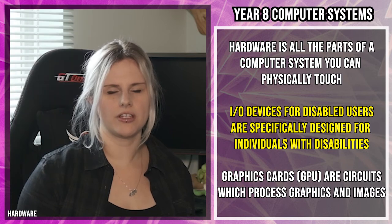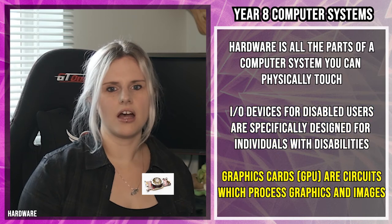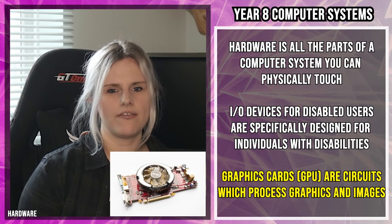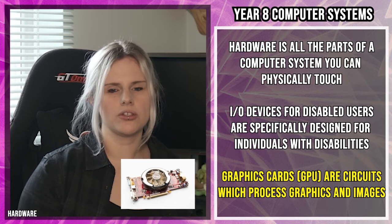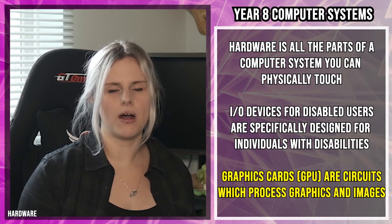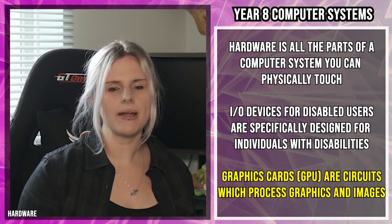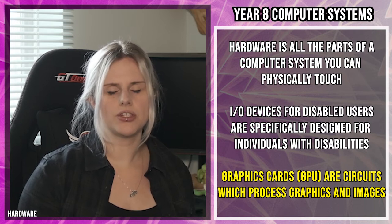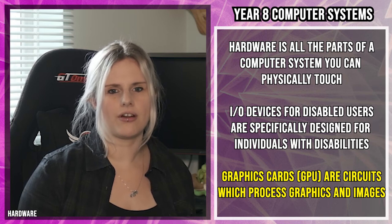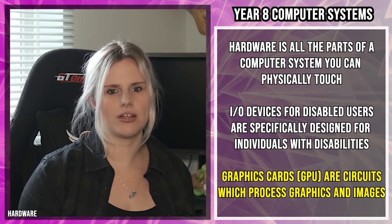Another piece of hardware is a graphics card, or GPU. Graphics cards are circuits that process graphics and image data, meaning the CPU doesn't have to handle the fetch-execute cycle parts related to graphics or images — the graphics card does them instead. Having a powerful graphics card in your computer can improve the system's performance because the CPU can focus on other aspects of the fetch-execute cycle.